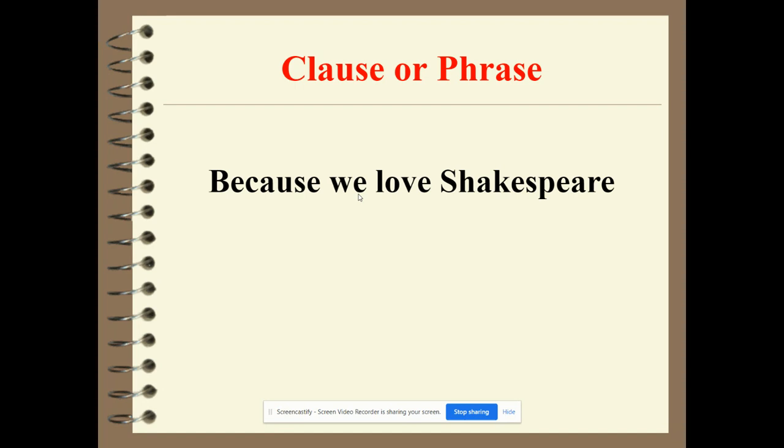You can be a dependent clause or an independent clause. A dependent clause has a subject and predicate but it's a fragment — it needs help. An independent clause is a complete sentence. 'Because we love Shakespeare' is a dependent clause. 'Because we love Shakespeare, we are reading Macbeth' — now I have a completed thought.